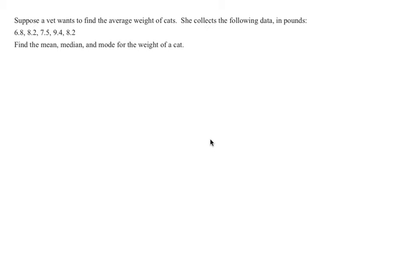In this example, we will look at how to find the mean, median, and mode for a data set. This is looking at finding the average weight of a cat. So we have five data points.